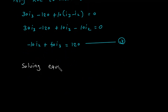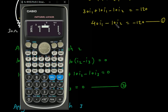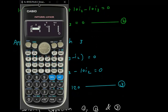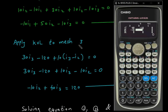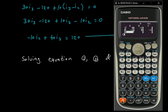Now solving equations 1, 2, and 3. We have 3 unknowns. Equation 1: 40I1 minus 10I2, I3 absent so 0, equals minus 120. Equation 2: minus 10I1, plus 50I2, minus 10I3, equals 0. Equation 3: I1 absent so 0, minus 10I2, plus 40I3, equals 120.